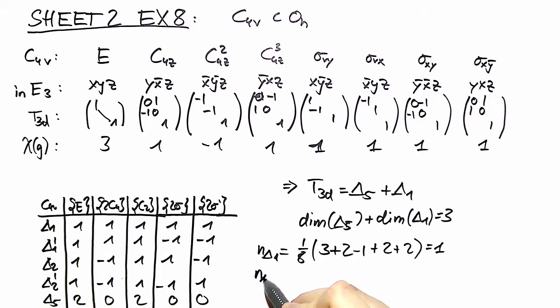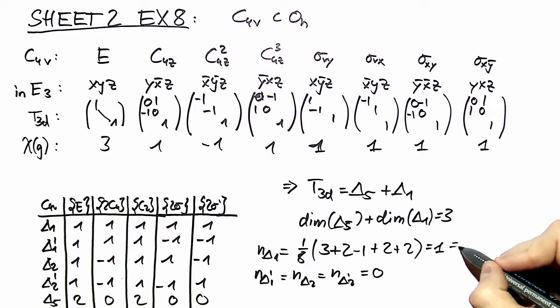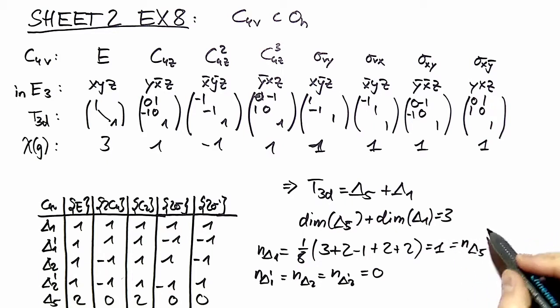In the same way, we can say δ1', δ2, δ2' have no components. T3D has no components of these three representations in it, and δ5 is again represented once in T3D.